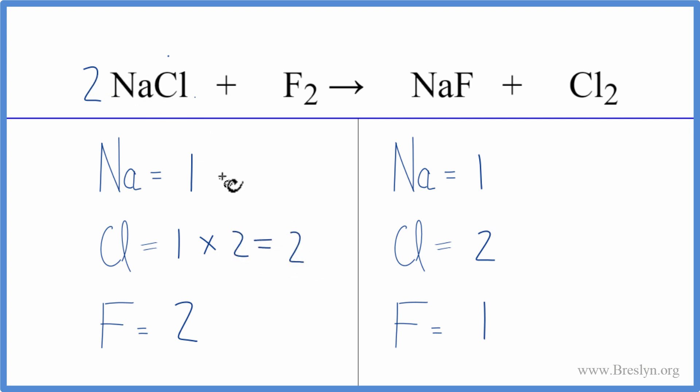One sodium times the two. So now we have two sodiums. Let's just fix the sodiums by putting a coefficient of two in front of the sodium fluoride. So now we have one times two. That balances the sodium atoms.